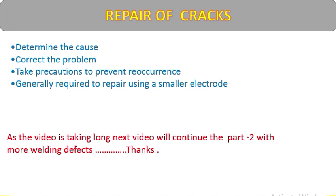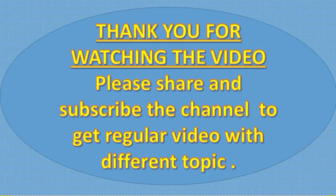General crack repair procedure: determine the cause, correct the problem, take precautions to prevent recurrence, and ensure back-welding does not happen again. Repairs generally require using a smaller electrode. All cracks require a formal repair procedure approved by the client. From the beginning, you should know the definition, cause, prevention, and repair for each defect type. Thank you for watching — please share and subscribe to the channel for regular videos on different topics.